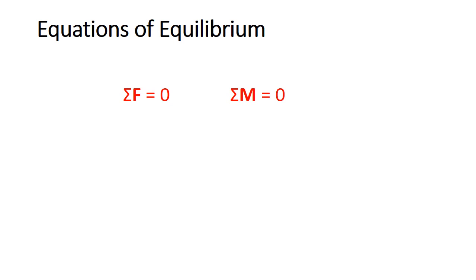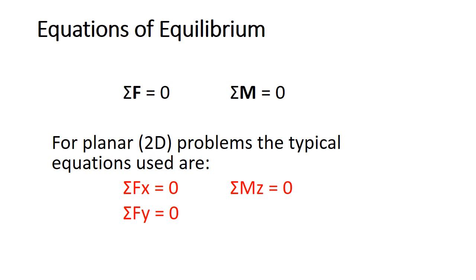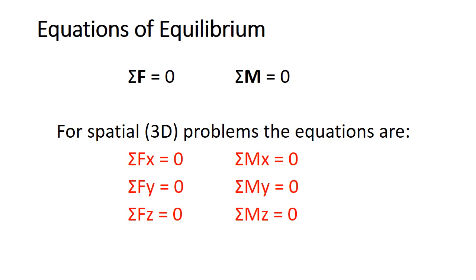Our last topic is the equations of equilibrium. This basically states that the resultant force and resultant couple moments of the entire system are equal to zero. In planar or two-dimensional systems we typically use: the sum of forces in the x-direction equals zero, the sum of forces in the y-direction equals zero, and the sum of moments about the z-axis or an axis parallel to z equals zero. In spatial or 3D systems we also include: the sum of forces in the z-direction equals zero, and the sum of moments in the x and y directions also equal zero.